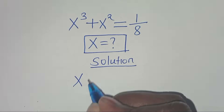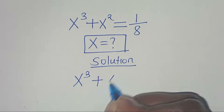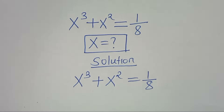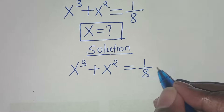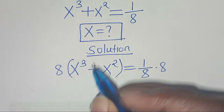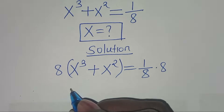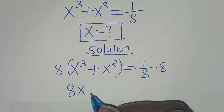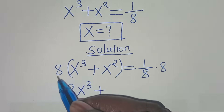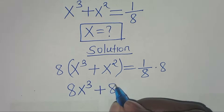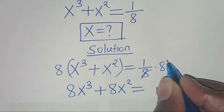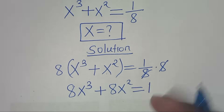We have x to the power of 3 plus x to the power of 2, this is equal to 1 over 8. The first thing is to multiply 8 on both sides, so that now we have 8 times x to the power of 3, plus 8 times x to the power of 2, this is equal to 1.